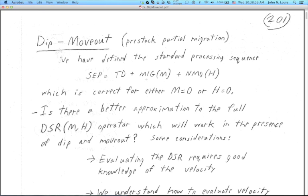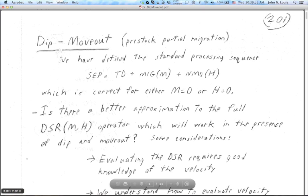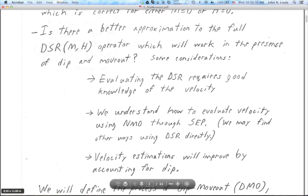The problem is that this SEP is correct only when either big M equals zero — in other words, there's no dip — or big H equals zero — in other words, there's no offset — or at least we're using only the very tops of the reflection and diffraction hyperbolas, and we're losing any appreciation for the flanks of the hyperbolas. So the question Dave Hale asked is: is there a better approximation to the full DSR, the full double square root equation, which is our wave equation representation of pre-stack or multi-offset seismic processing? Is there a better approximation that will work in the presence of dip and moveout?